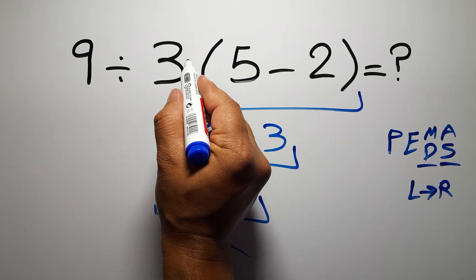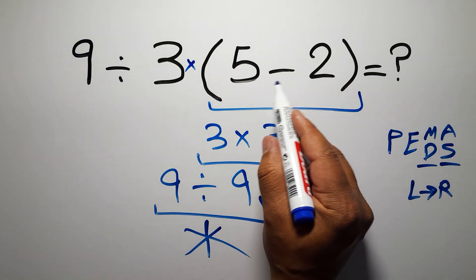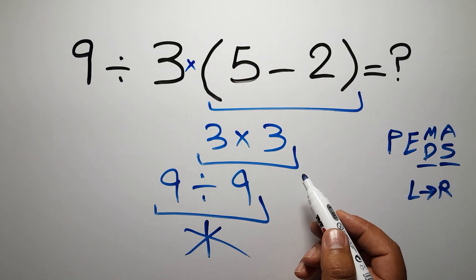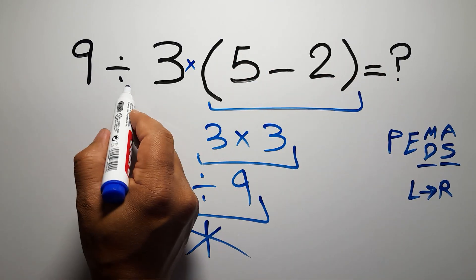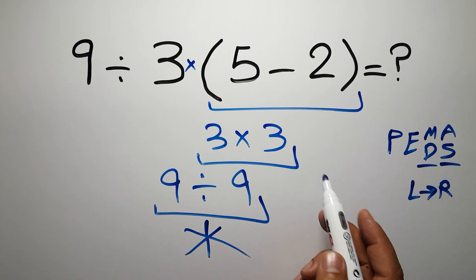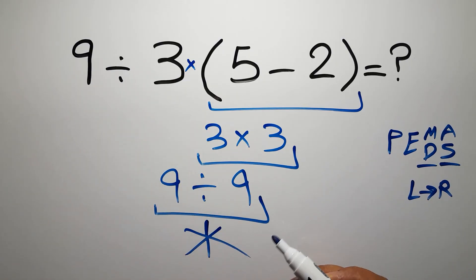In this expression we have one division, one multiplication, and one parentheses. Inside this parentheses we have one subtraction. So first we have to do this parentheses, then this division, and finally this multiplication. If you do this multiplication before this division, it is wrong.